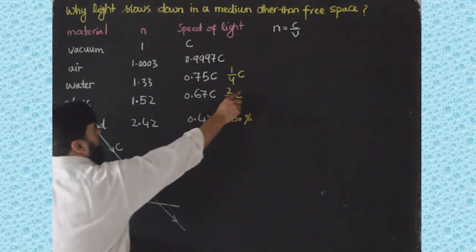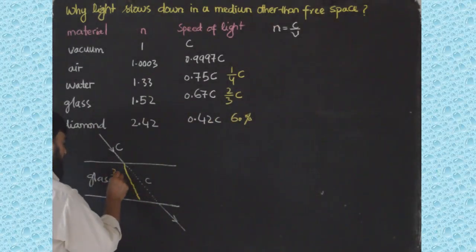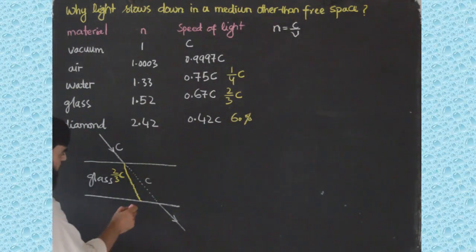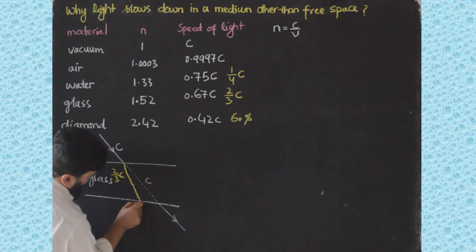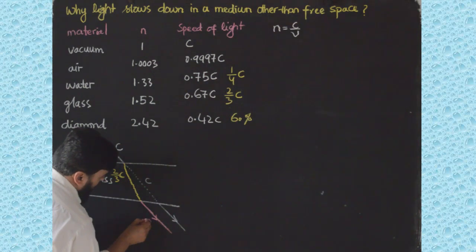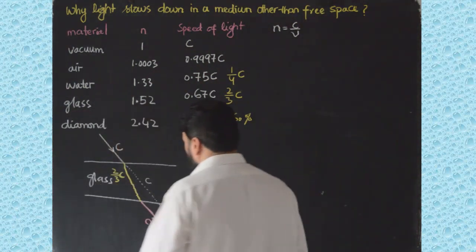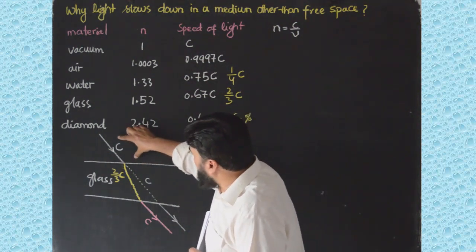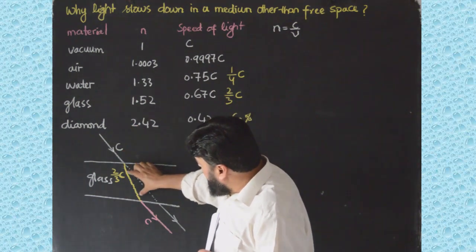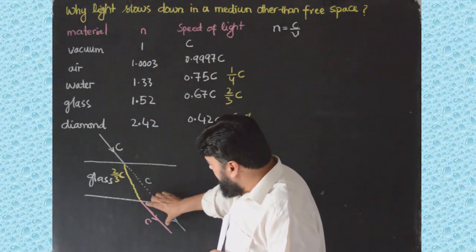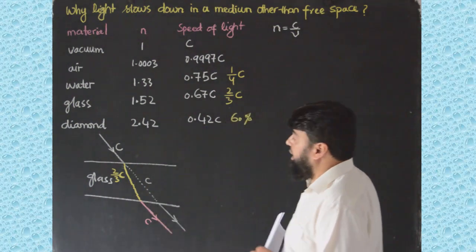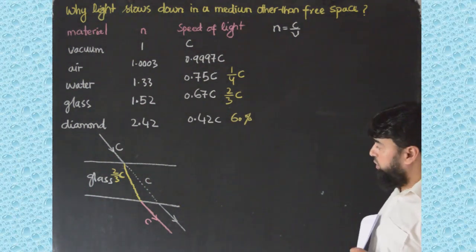Inside glass the speed is two-thirds the speed of light. As the light reaches the far surface and exits, it again starts travelling with the full speed of light. So inside this medium the light speed has been reduced, and then the light regains its speed. What is causing this reduction inside the medium?